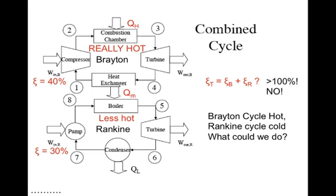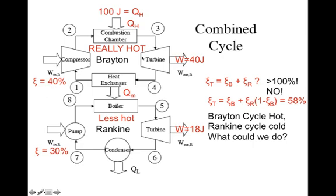You don't just add them — if they were higher efficiency, you could potentially get over 100%, which is not correct. The correct formula is: efficiency of the Brayton plus the efficiency of the Rankine times (1 minus the efficiency of the Brayton). Starting with 100 joules in the Brayton cycle at 40% efficiency, you'd get 40 joules out here and only 18 joules out of the Rankine — that's 58 joules total, or 58% efficiency. The Rankine only produces 18 joules, not 30, because we only had 60 joules left over after 40 joules were turned to work. So 60 joules times 0.3 is 18 joules, and the total waste heat is 42 joules.